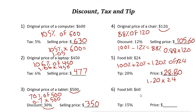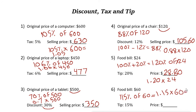Let's look at the next one. The food bill is sixty dollars and you want to add a fifteen percent tip. When you add fifteen percent, you pay one hundred fifteen percent of sixty dollars. One hundred fifteen percent is one point fifteen, so one point fifteen times sixty equals sixty nine dollars — that's what you leave for the bill and the tip.